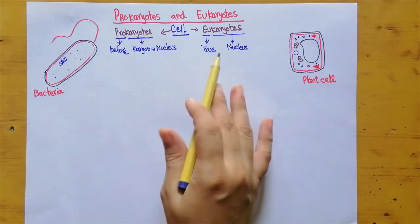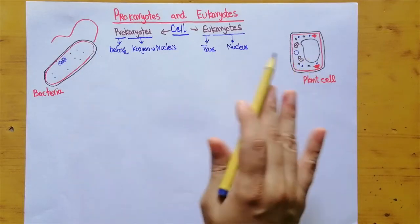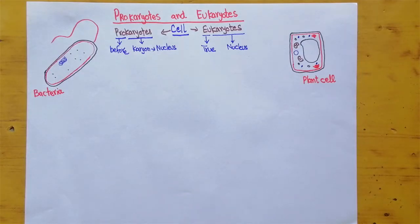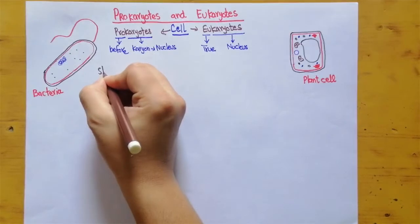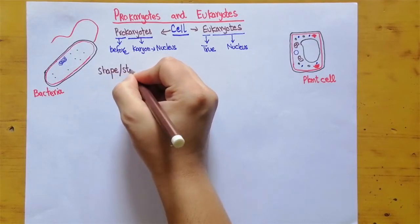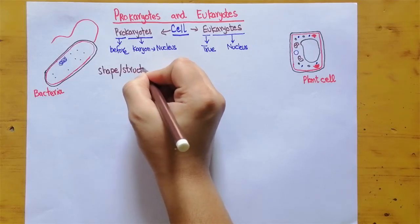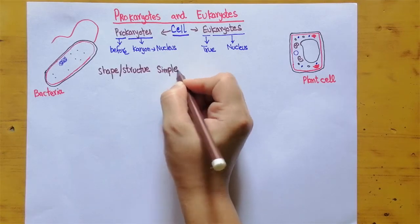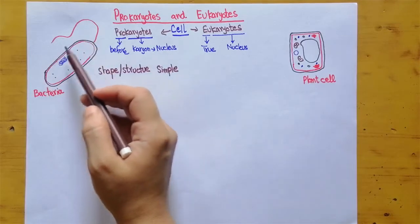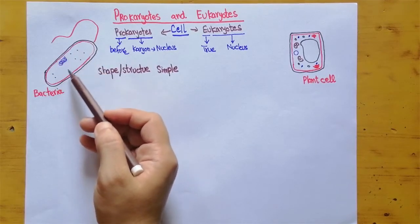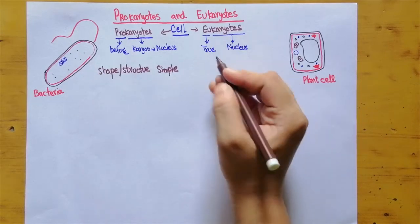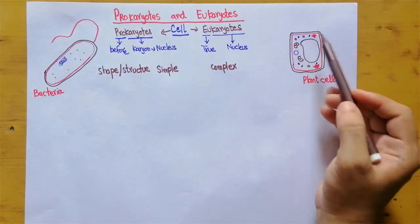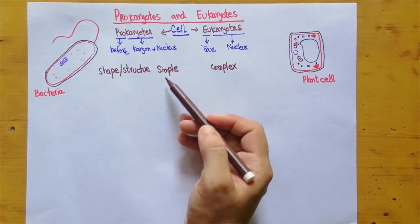These two types of cells can be discussed by understanding their differences. First, if we talk about structure: prokaryotes are very simple in structure. As you can see in this diagram, bacteria have just a small number of organelles, while eukaryotes are complex in nature — plant cells have so many organelles inside their cytoplasm.